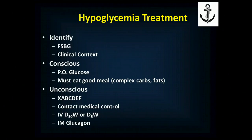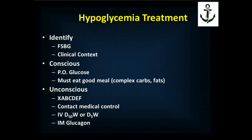Treatment is to identify it with a finger stick blood glucose (FSBG) — that is critical. Altered mental status: XABCDEF, vital signs, and your first test is to get a blood sugar. Think about the clinical context: is there a reason this patient should be hypoglycemic? If you don't have a glucometer — and you should have one, they're only about $20 — and the patient is a known diabetic using insulin, think about a hypoglycemic episode. If they're conscious: oral glucose and a good meal. Oral glucose gets the sugar up a little, but they need complex carbohydrates and fats to maintain a more normal basal glucose level.